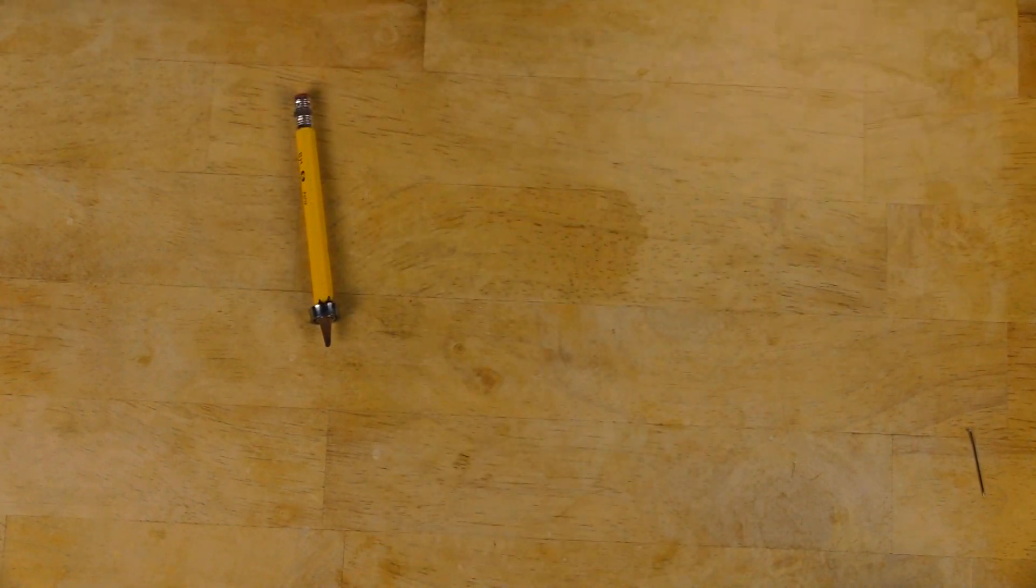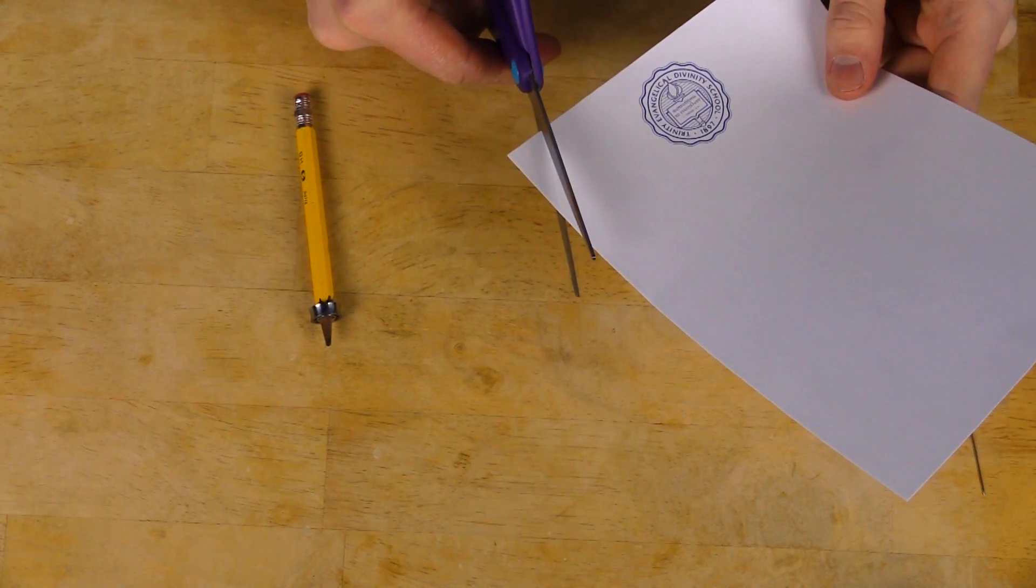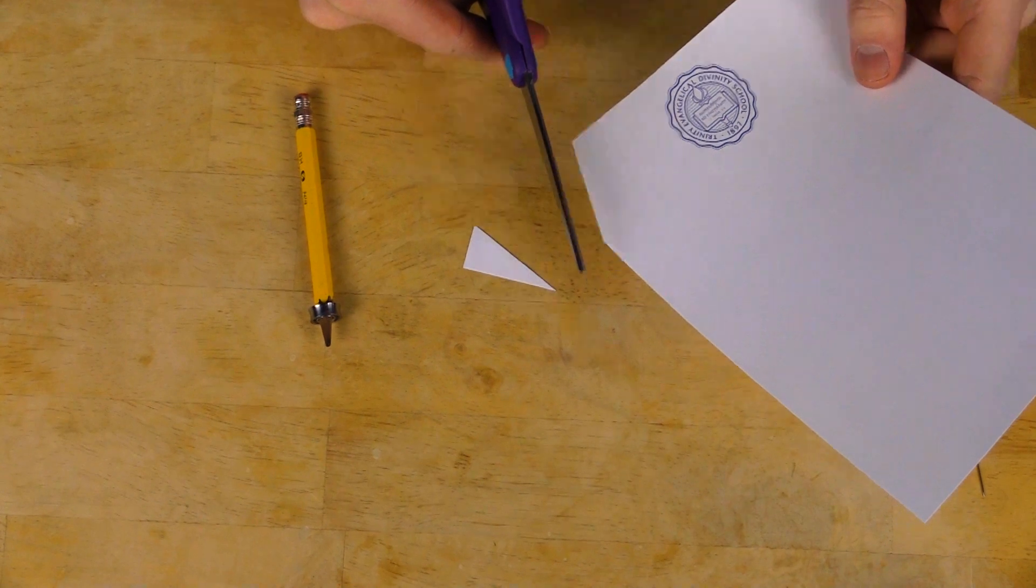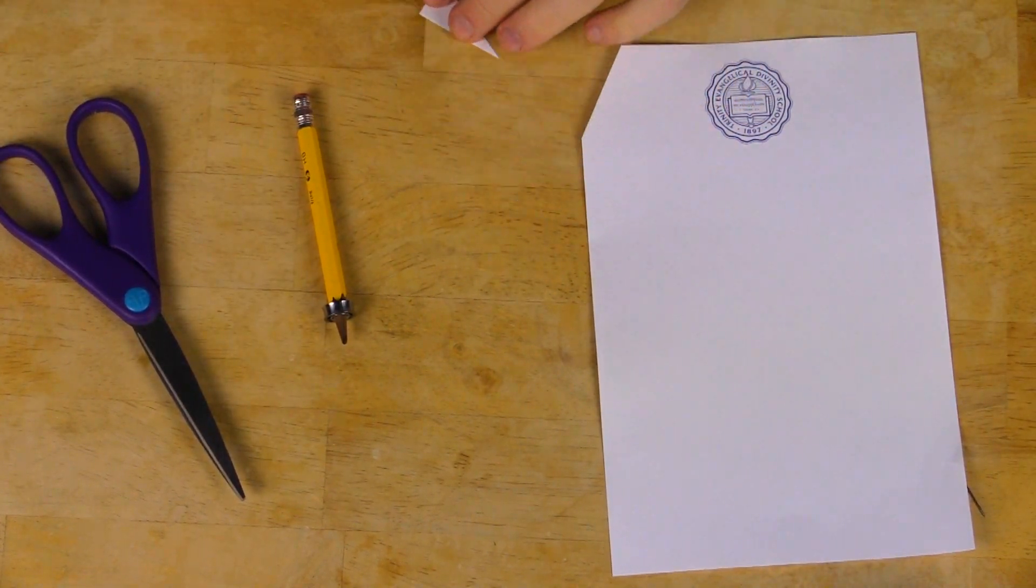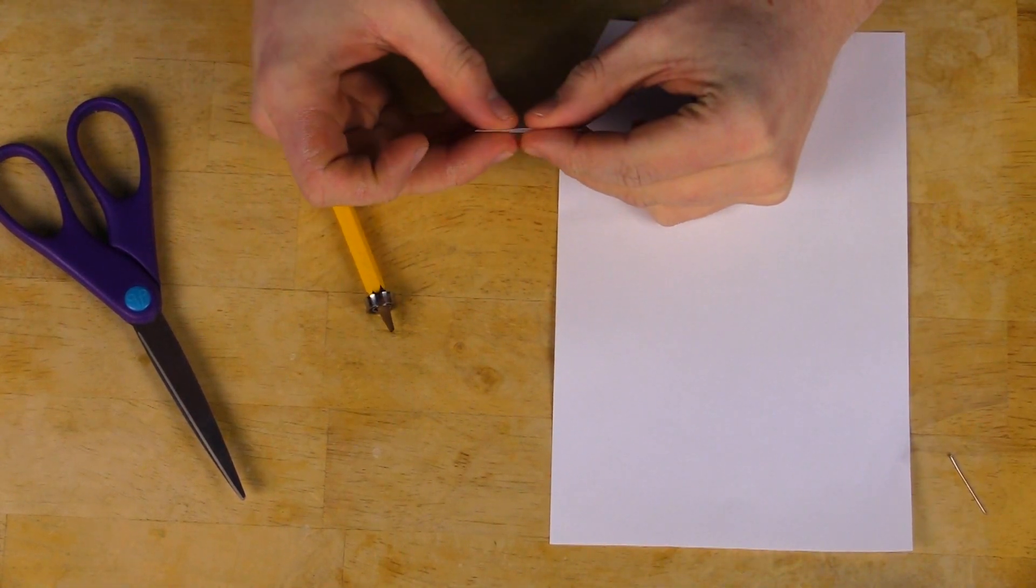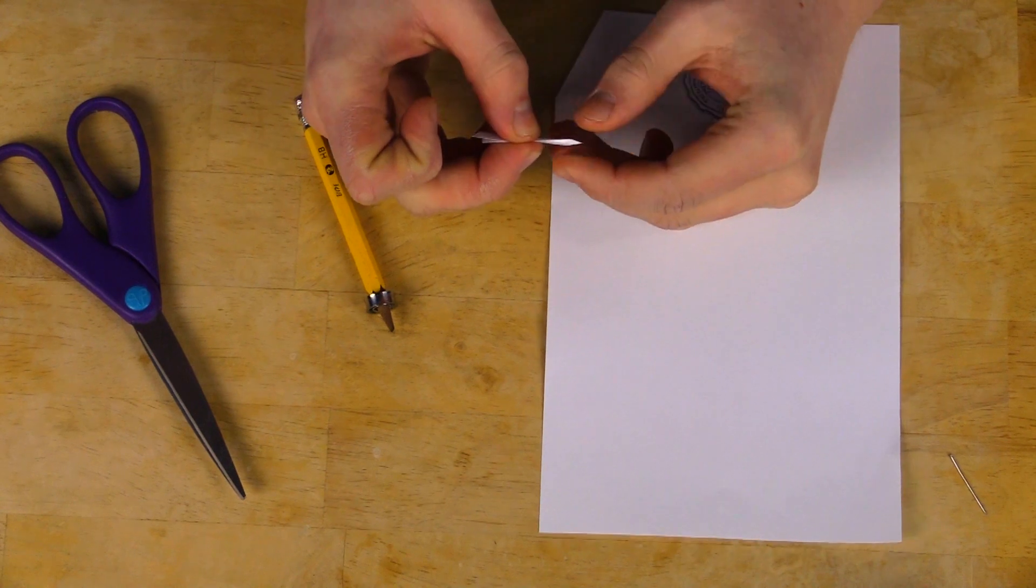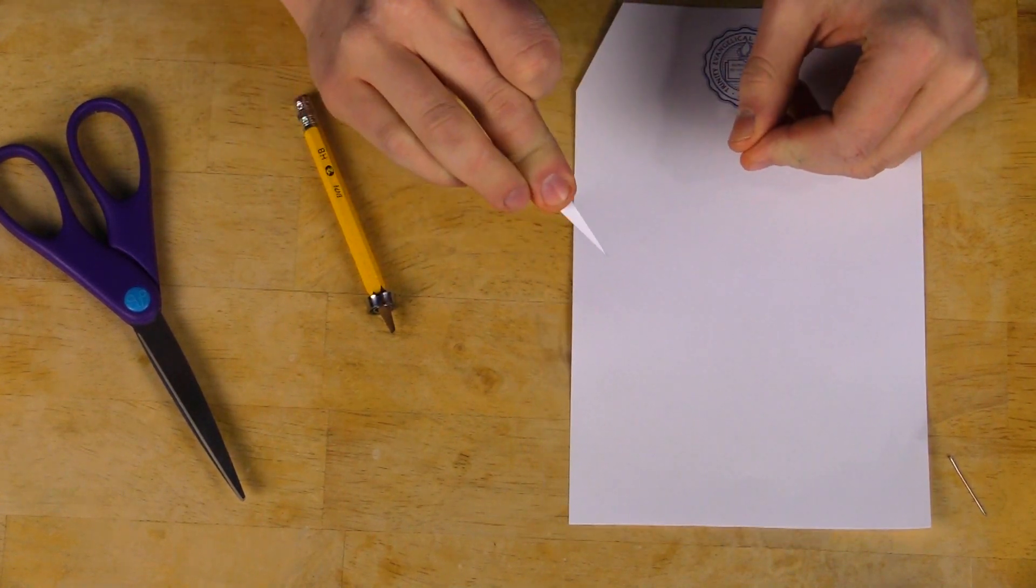So what you want to do is take your piece of paper and your scissors and cut off the corner of the piece of paper and make a triangle. This triangle is about an inch and a half long and three-quarters of an inch wide. Then you want to take this piece of paper and fold it in half so that you have one triangle that is two pieces of paper thick.